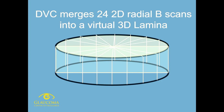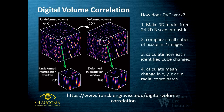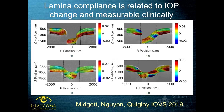The digital volume correlation (DVC) method takes 24 radial B-scans and produces a three-dimensional image of the lamina cribrosa. The method then takes the undeformed volume and compares it to the deformed volume — the two images at two different pressures — and indicates in thousands of 50 by 50 by 50 micron voxels which reflectance positions have changed, how they changed, and in what direction. These can be converted into color images showing strain within the lamina cribrosa — how much the tissue has expanded, contracted, or gone into shear.